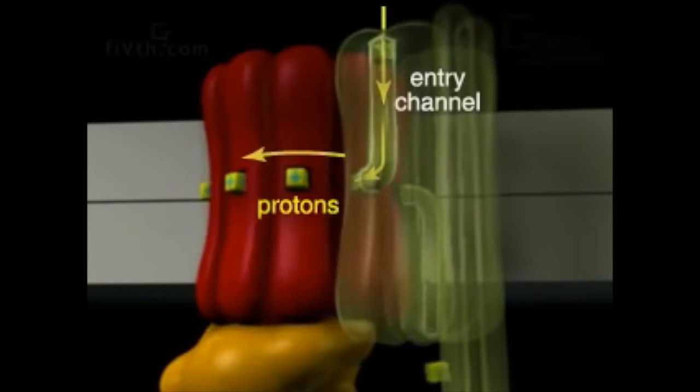The flow of protons down the electrochemical gradient drives a rotor that lies in the membrane. Every proton flows to an entry open to one side of the membrane and binds to the rotor subunit.